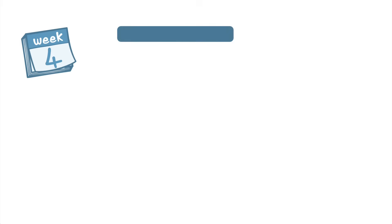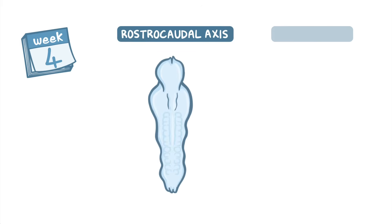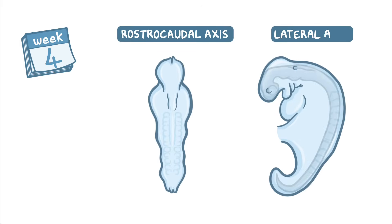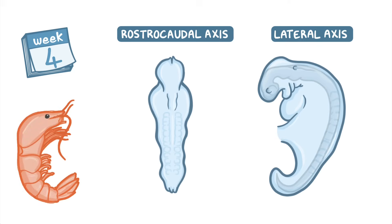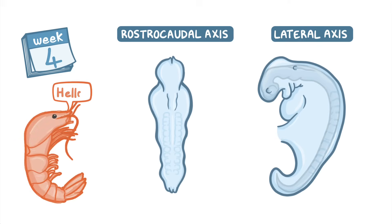By week four of development, as a result of the folding of the embryo along the rostrocaudal axis and the lateral axis, it takes on a more recognizably human form. But to be honest, it still looks more like a shrimp than a baby.